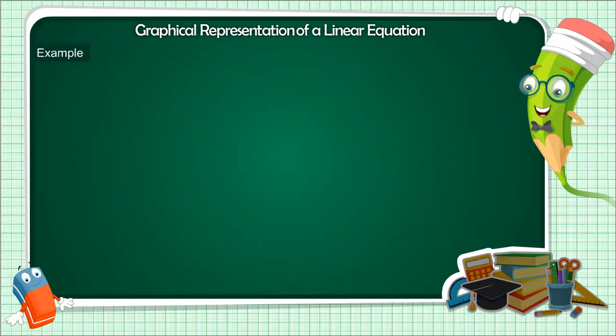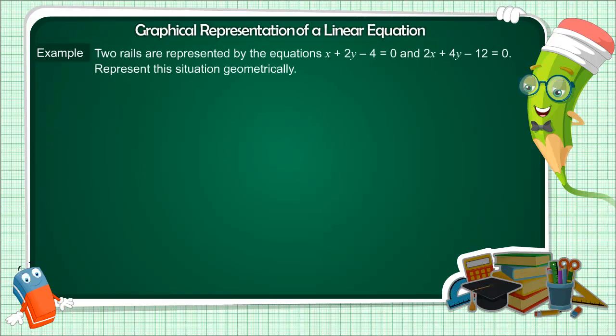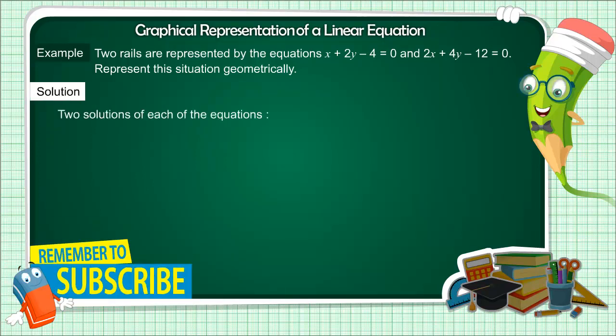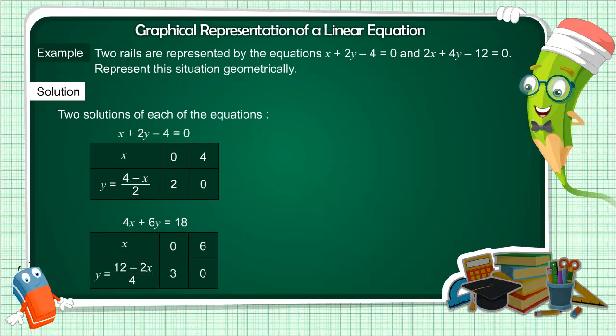Let us try to understand it better through another example. Here two trains are represented by two equations. Let us see how to display these situations graphically. Just like in the previous example, we have found two solutions of both the equations here, which you can see in the table.